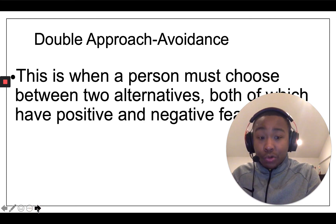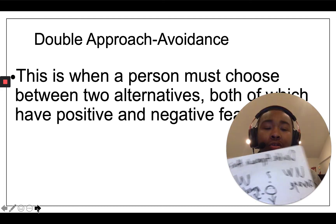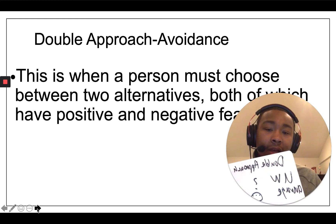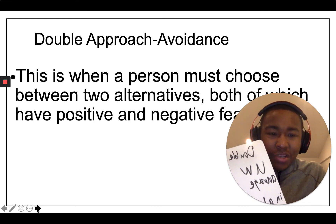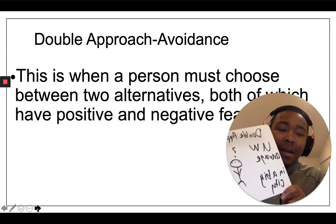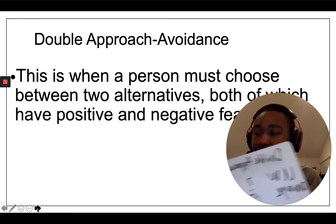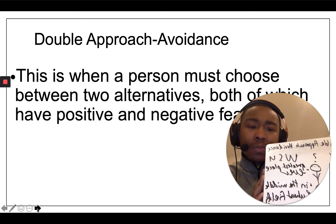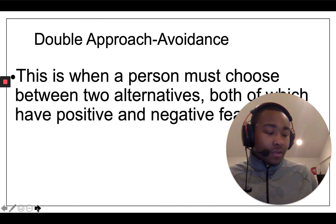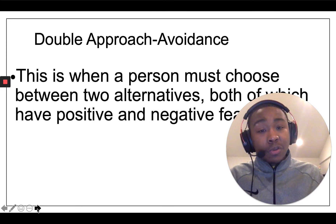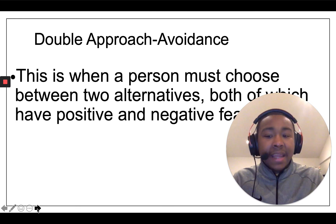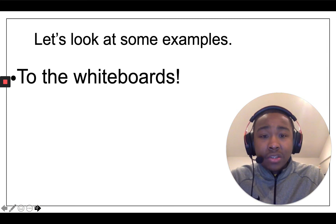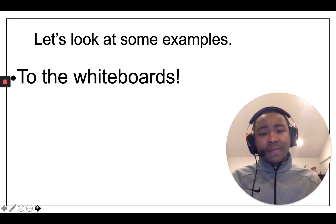And then we have double approach-avoidance. Let's say you're deciding what college to go to — UW or WSU. The avoidance for UW is that it's kind of an average school, but they're in a big city, and for you that's a big approach. For WSU, the approach is that it's the greatest university that's ever existed, but an avoidance could be that it's kind of in the middle of nowhere in wheat fields. You ultimately have to make a choice between the two, but both have positive and negative features — and you can see how these conflicts can cause stress because you have to weigh the pros and cons.